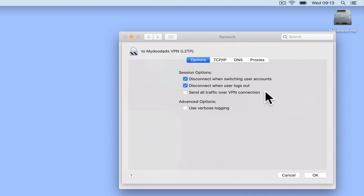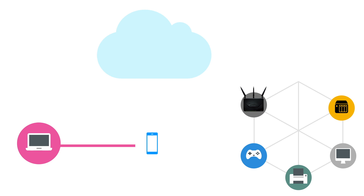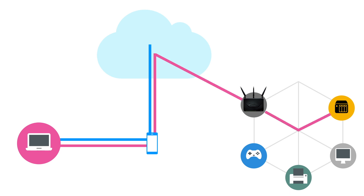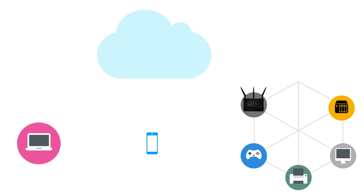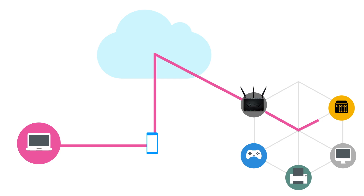The option Send all traffic over VPN connection is one you might want to enable or leave disabled depending on your requirements and how your Synology NAS has been configured. If we leave the VPN client set so that not all data traffic is sent through our VPN connection, certain data types such as internet traffic can be more quickly sent and received, because our VPN client will not relay that traffic through our VPN server. While this has the benefit that browsing the internet will be faster, by leaving Send all traffic over VPN connection disabled, we could allow a third party to more easily determine the true location of our computer.